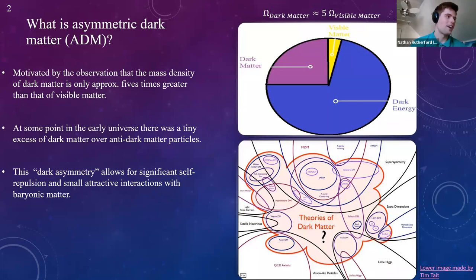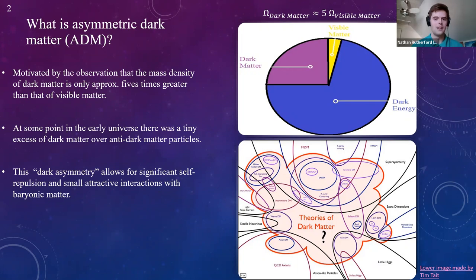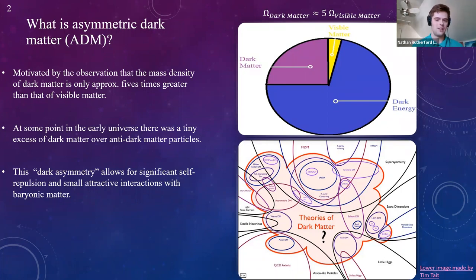The first thing I want to introduce is: what is asymmetric dark matter? Asymmetric dark matter is a set of theories motivated by the observation that the mass density of dark matter is only approximately five times greater than that of visible matter. I'll be switching between 'visible' and 'baryonic' but mean the same thing.